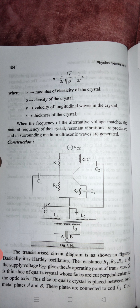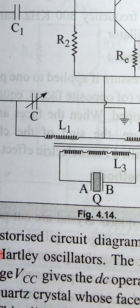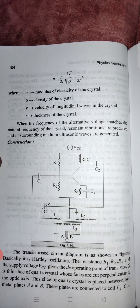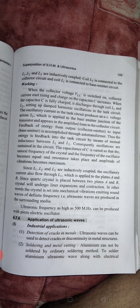Q is the thin slice of quartz crystal whose faces are cut perpendicular to the optical axis. This quartz crystal Q is visible between plates A and B in the diagram — it is our actual quartz crystal that will vibrate and produce ultrasonic waves. This slice is placed between two metal plates A and B, which are connected to coil L3. Coil L1 is connected to the base-emitter circuit, and L2 is connected to the collector circuit.